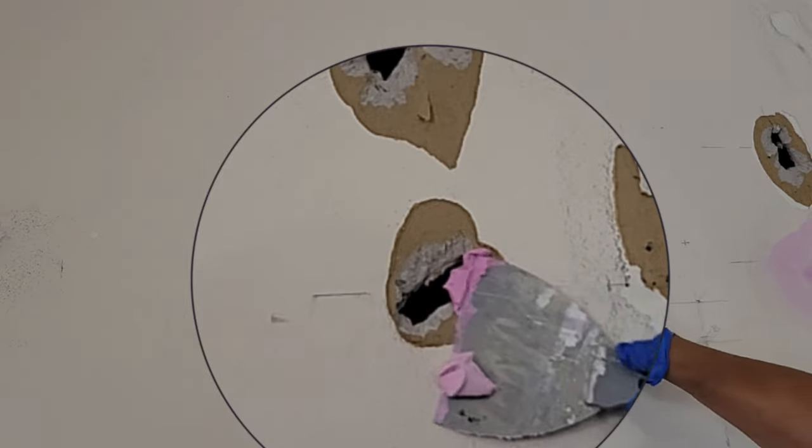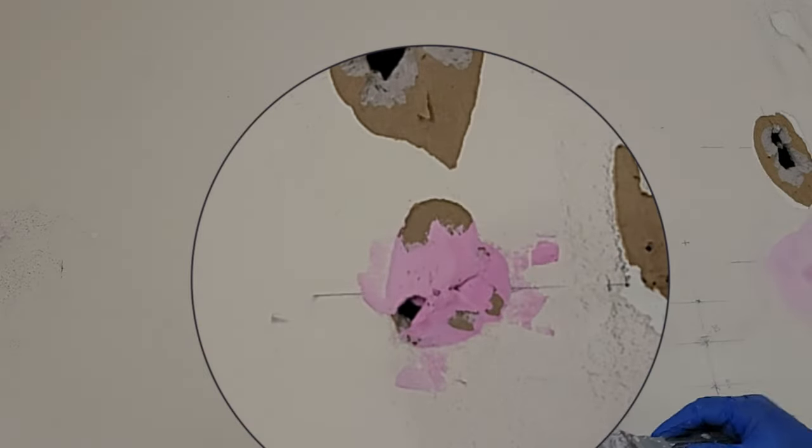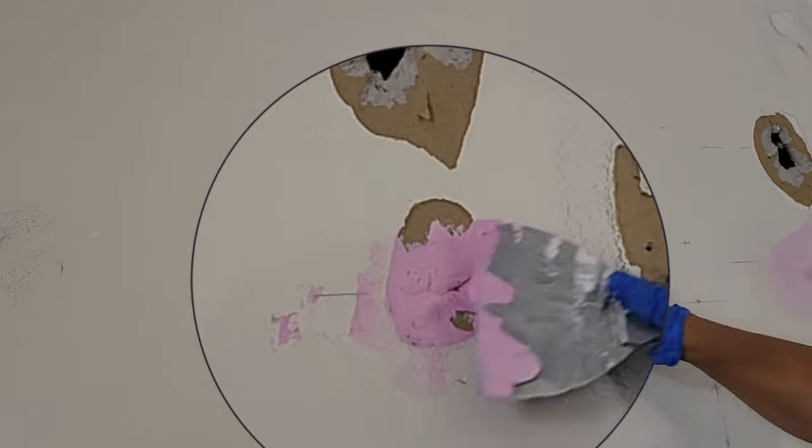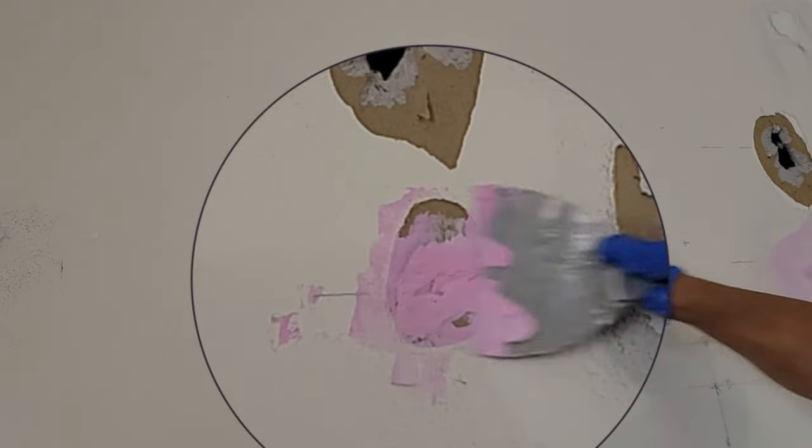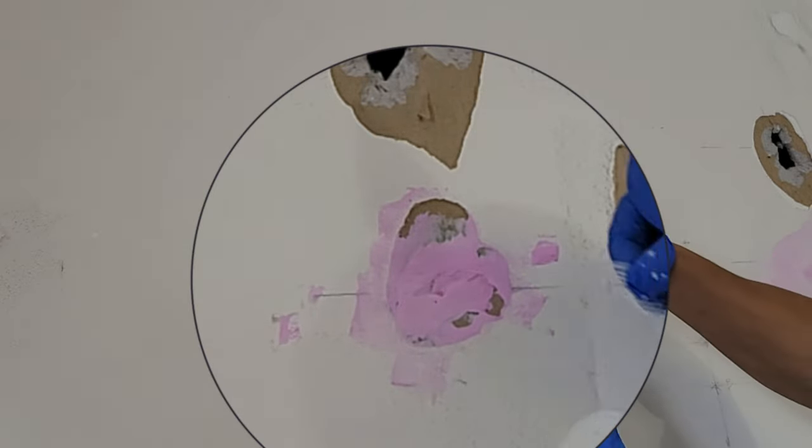For this particular hole right here, what we're going to do is we're going to put some compound first around where the actual hole is. So what I'm using right here is a spatula, a smaller and a bigger one. I'm using the bigger one as a holder to hold the compound.